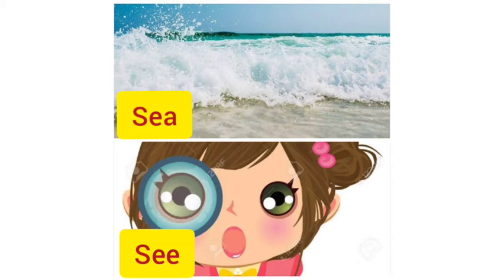Look at these two words: S-E-A and S-E-E. In the first word the long 'ee' comes as E-A; in the second it is double-E. The meaning is also different. S-E-A means the beach or sea. S-E-E means looking — seeing with your eyes. Both sound the same, but the spelling and meaning are different.